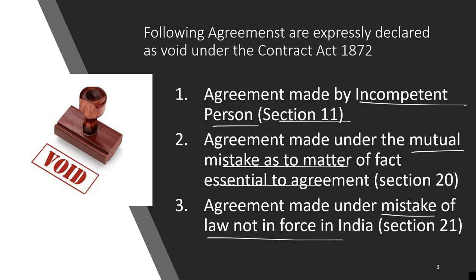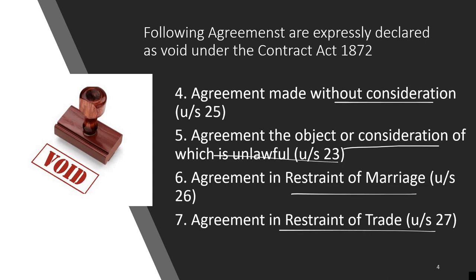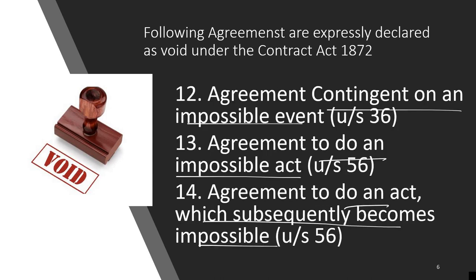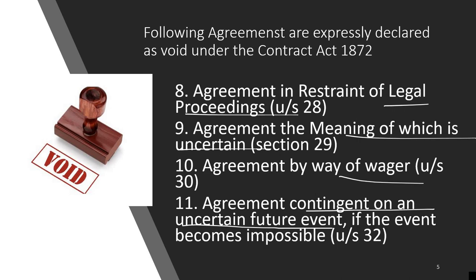To summarize: agreement by incompetent person — null and void; mistake of fact — null and void; mistake of law not in force in India — void; without consideration — void; unlawful consideration or object — void; restraint of marriage, trade, legal proceedings — void; uncertain meaning — void; wager — void. For impossibility, there are four points covering contingent event impossibility and impossibility of fact, whether initial or subsequent — all null and void.